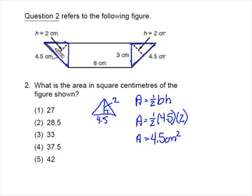Do that for both triangles. You might notice that the measurements are the exact same for the triangle on the right. So its area also equals 4.5 centimeters squared.